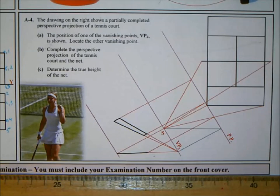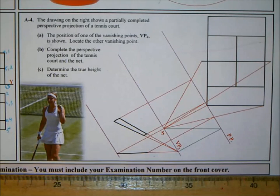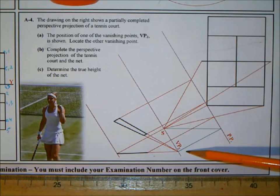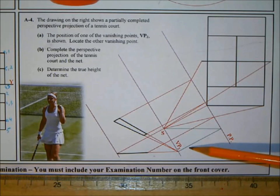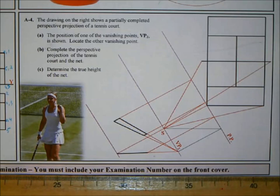Welcome to another DCG tutorial. Today we're working on a 2014 paper, Section A short questions, question A4. The drawing shows a partially completed perspective projection of a tennis court. Part a: locate the other vanishing point VP1. Part b: complete the perspective projection of the tennis court and net. Part c: determine the true height of the net.